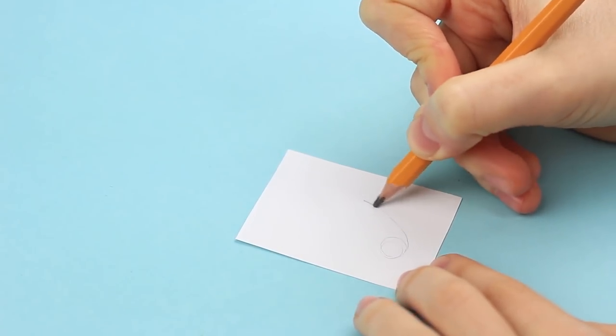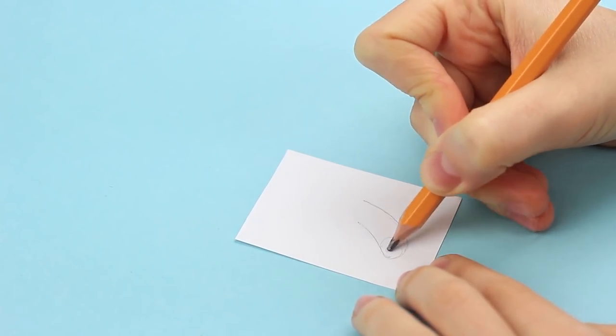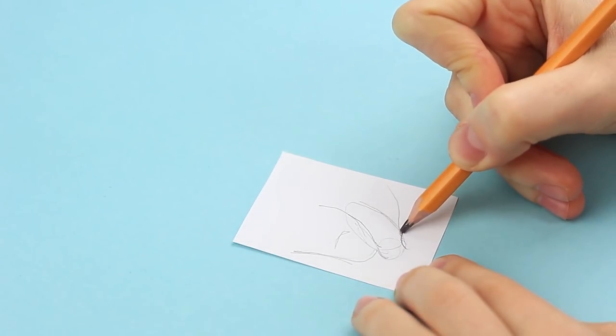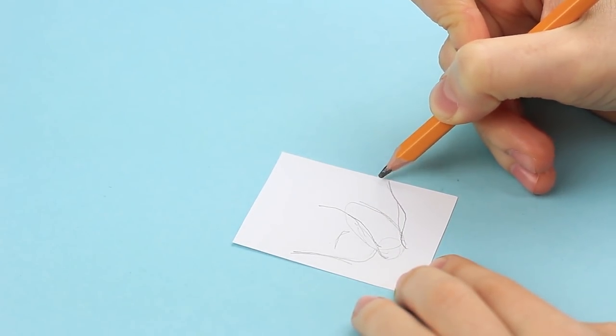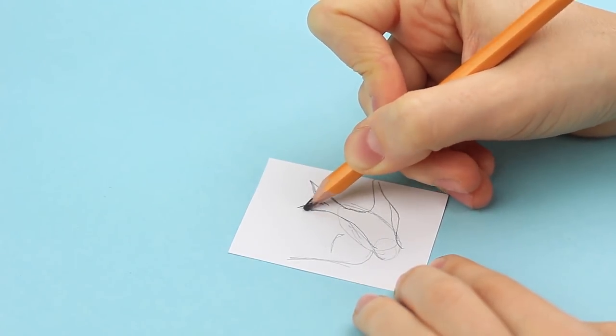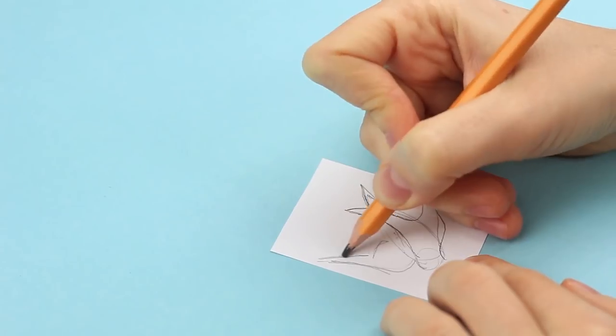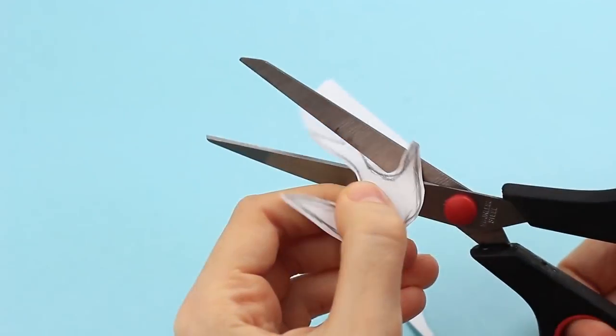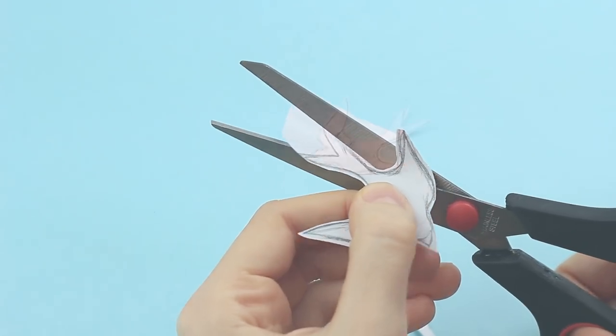Let's start with the pattern. Draw a swallow on a piece of thick paper. Better look up what it looks like. You can find a picture of the bird on the internet or in a book. Any image consists of simple shapes like a circle, square, oval, etc. Begin with them defining the shape gradually. Cut it out. Done!